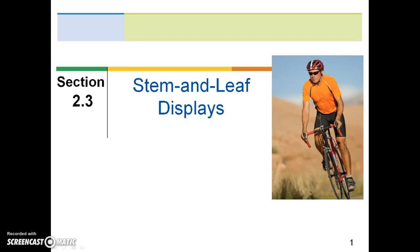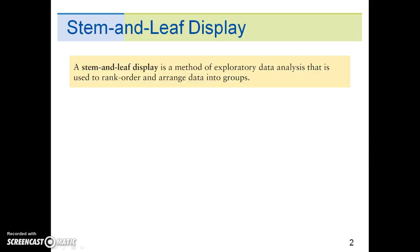Section 2.3 is on stem-and-leaf displays. A stem-and-leaf display is a method of exploratory data analysis that is used to rank, order, and arrange data into groups.